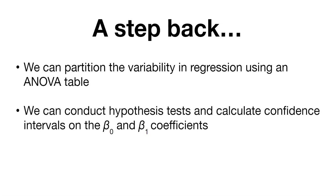We can also conduct a hypothesis test and calculate confidence intervals for the beta zero and beta one coefficients. This helps us know how well beta zero and beta one perform—that is, how well do the intercept and the slope values perform for our regression equation.